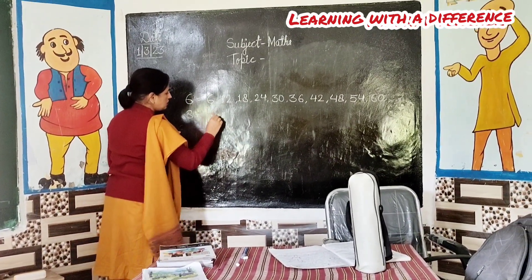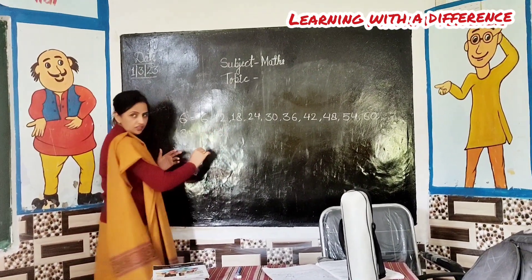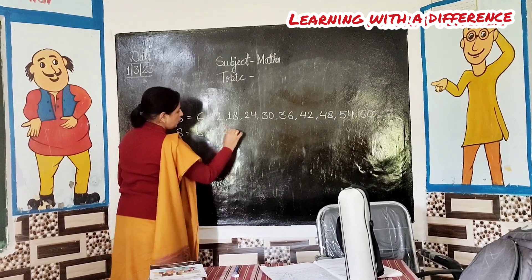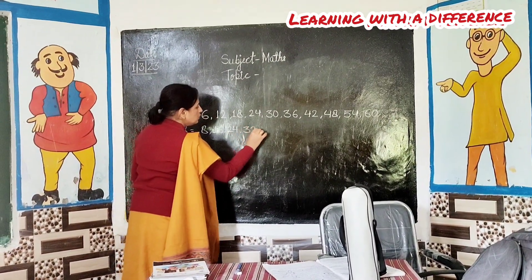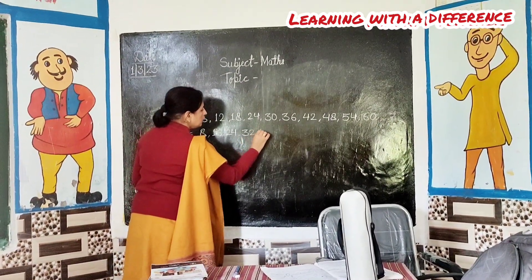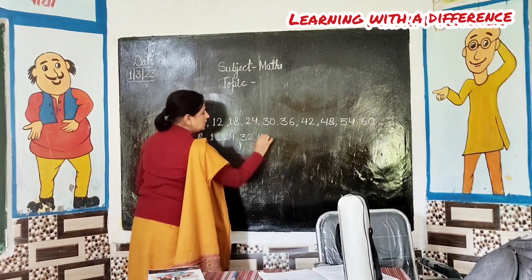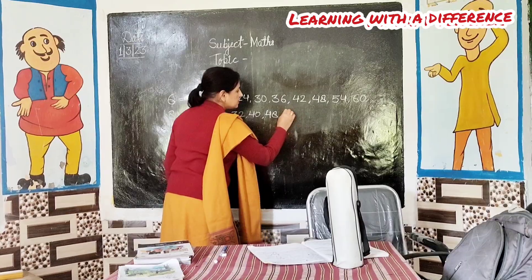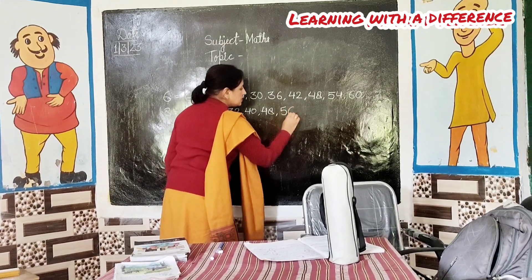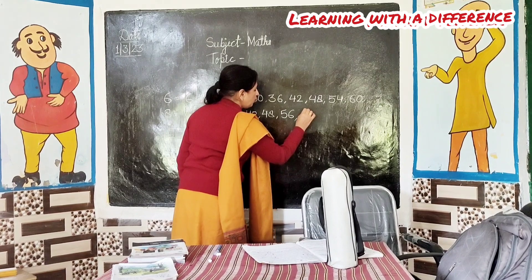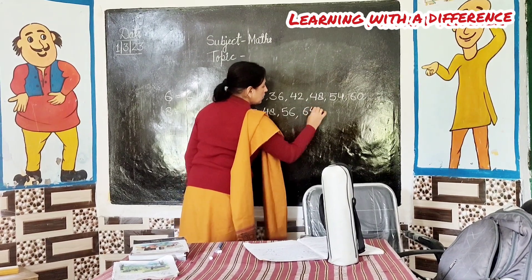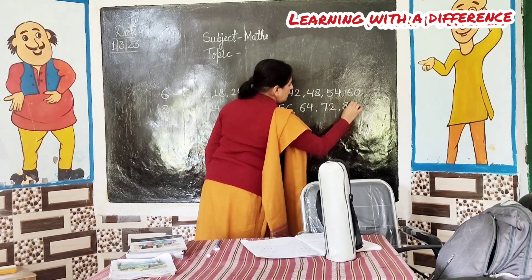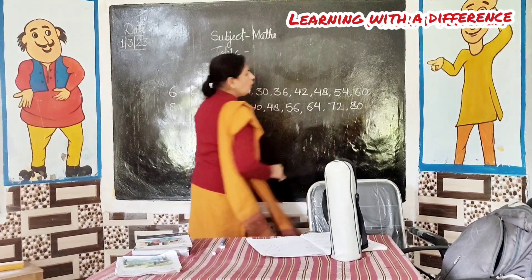8 ones are 8. 8 twos are 16. Very good. 8 threes are 24. 8 fours are 32. 8 fives are 40. Very nice. 8 sixes are 48. 8 sevens are 56. 8 eights are 64. 8 nines are 72. And 8 tens are 80. Okay.